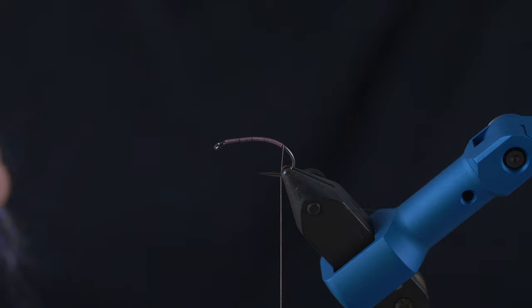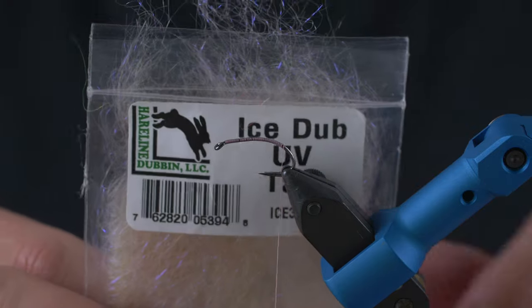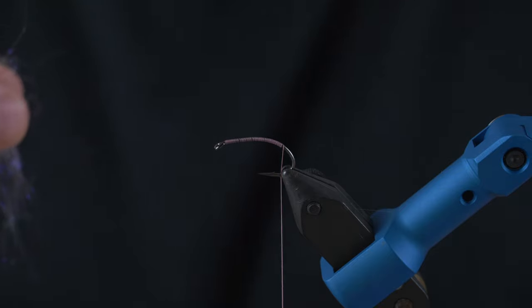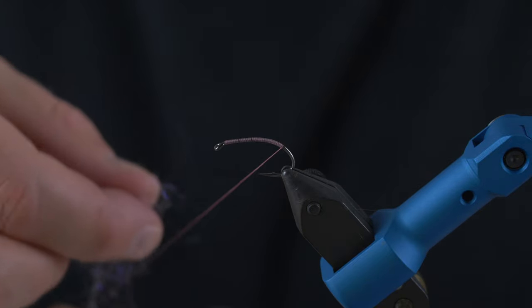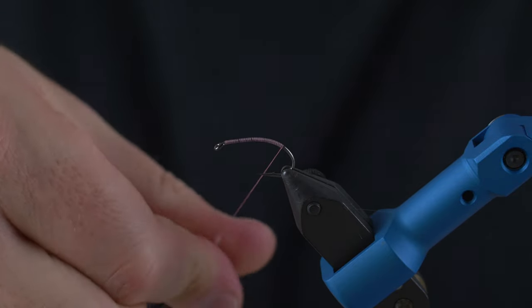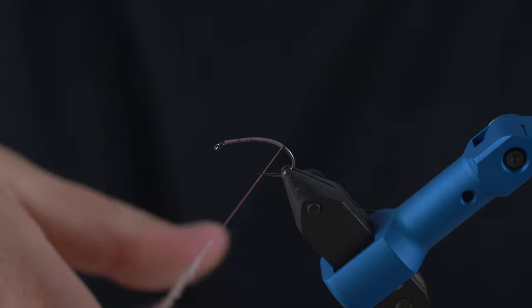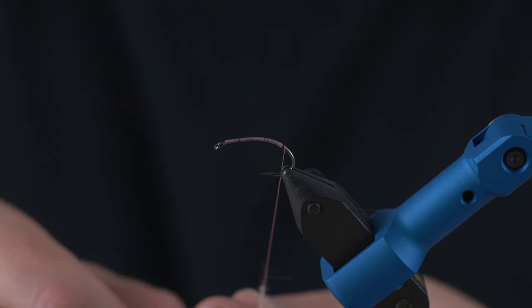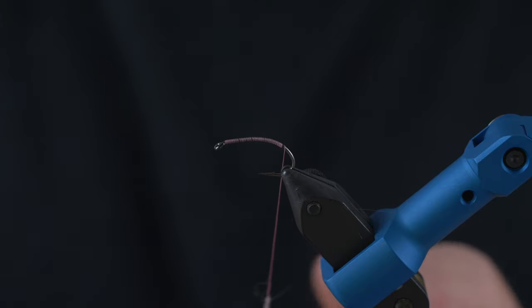So the first thing we need to do is apply a bit of dubbing here, the iced dubbing in the UV tan. And I've mounted a pink tying thread because this pinky shoe will lend to the dubbing really well and suits the fly well. This is something that Bo was very adamant about.